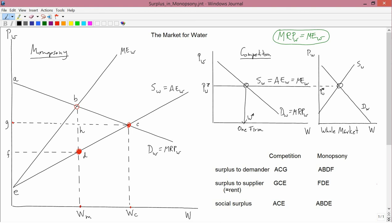We've identified in the left-hand diagram with the two solid red dots where the competitive outcome and the monopsony outcome for this input market. Now we need to discuss the implications for surplus.